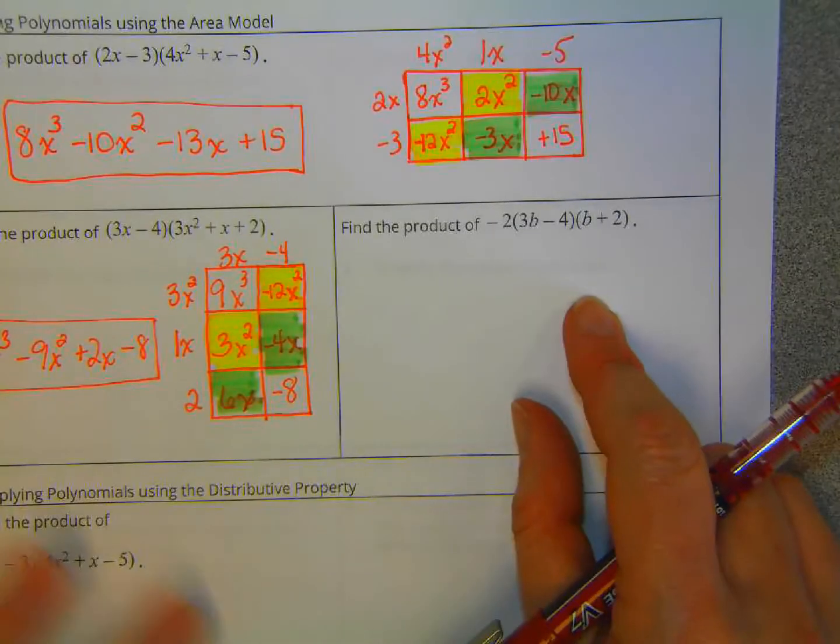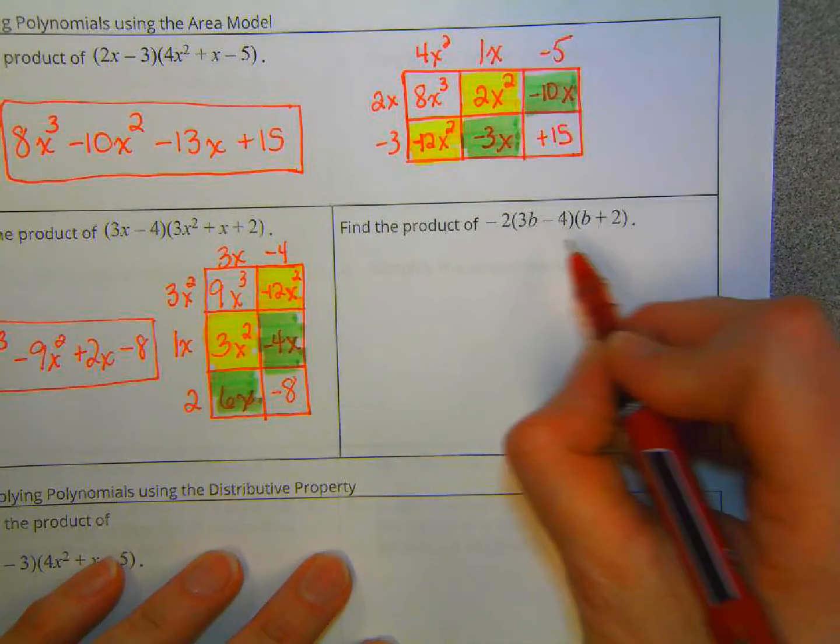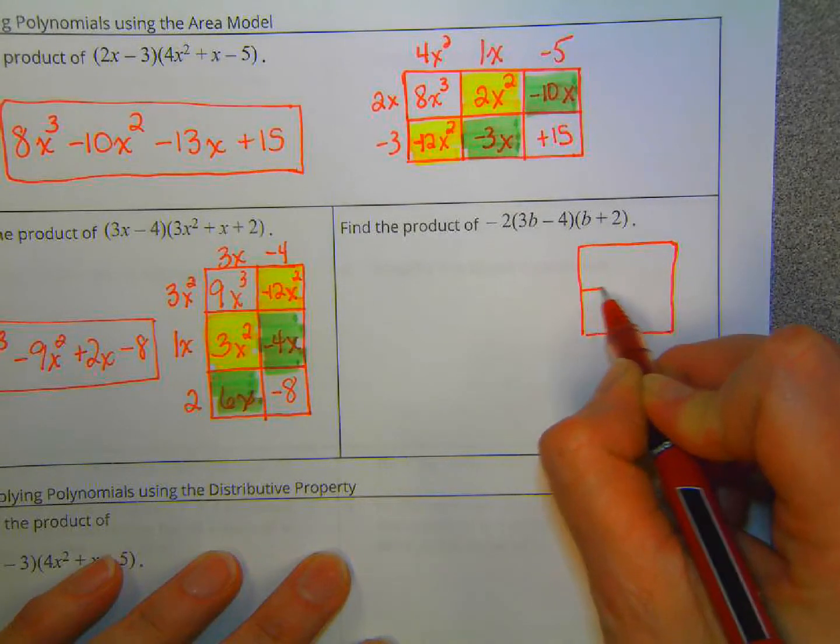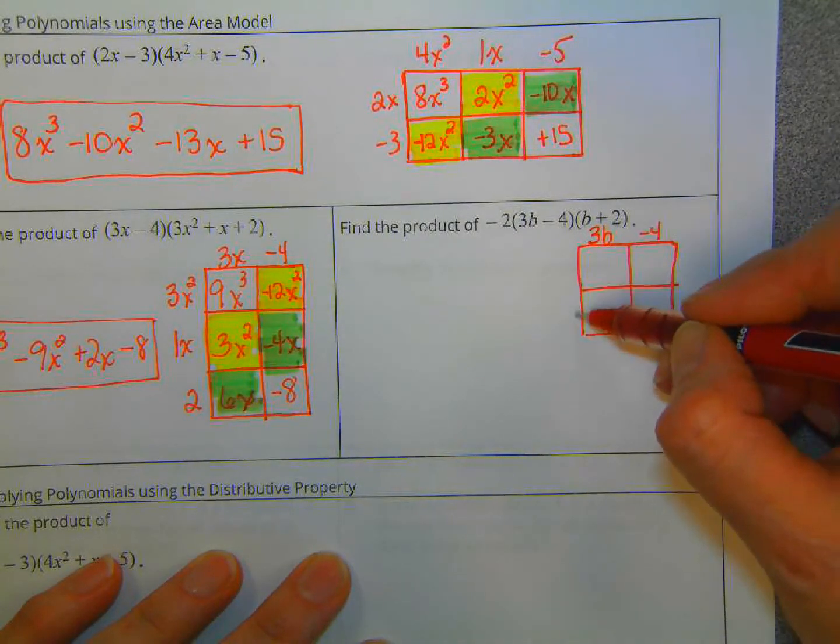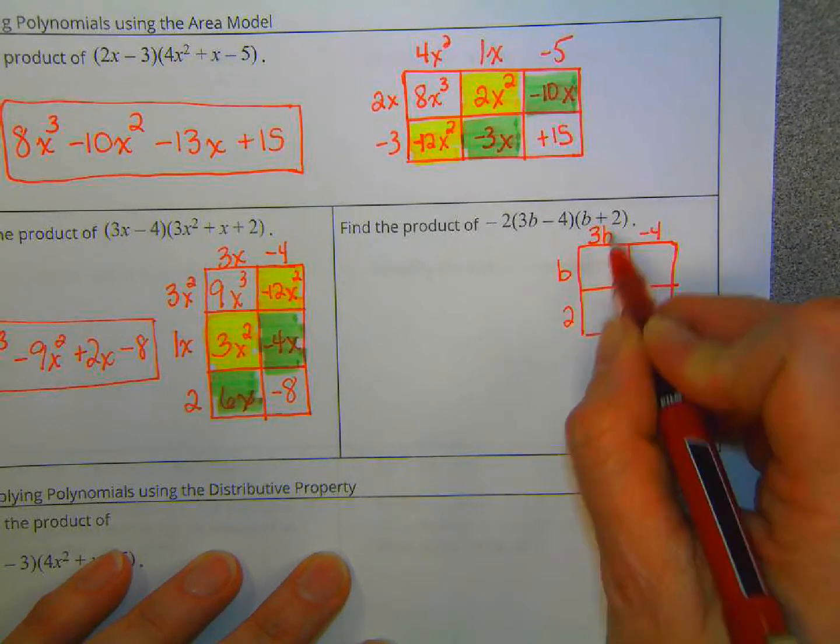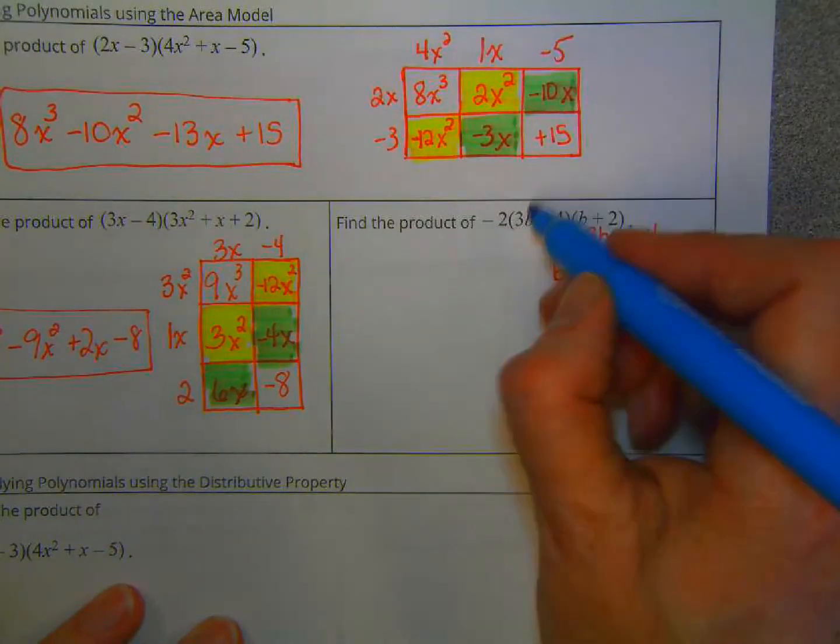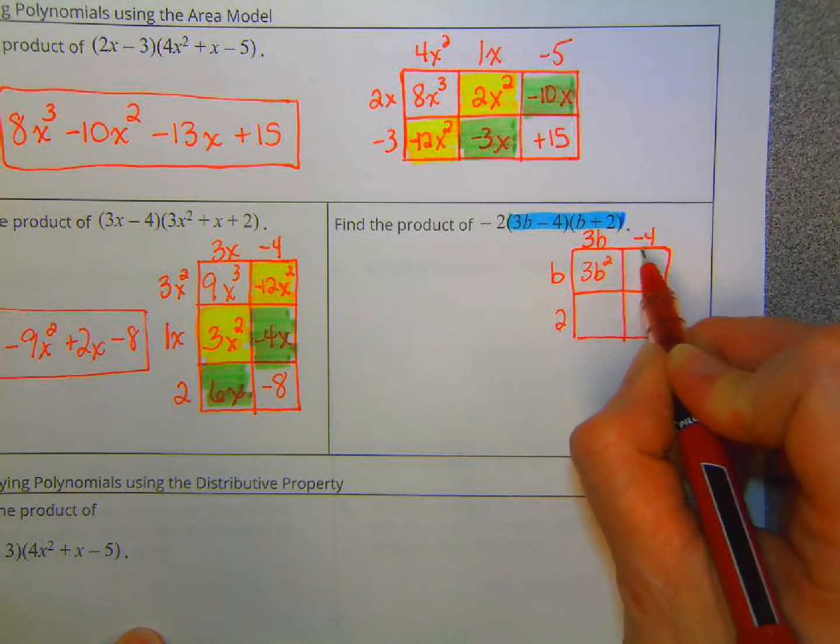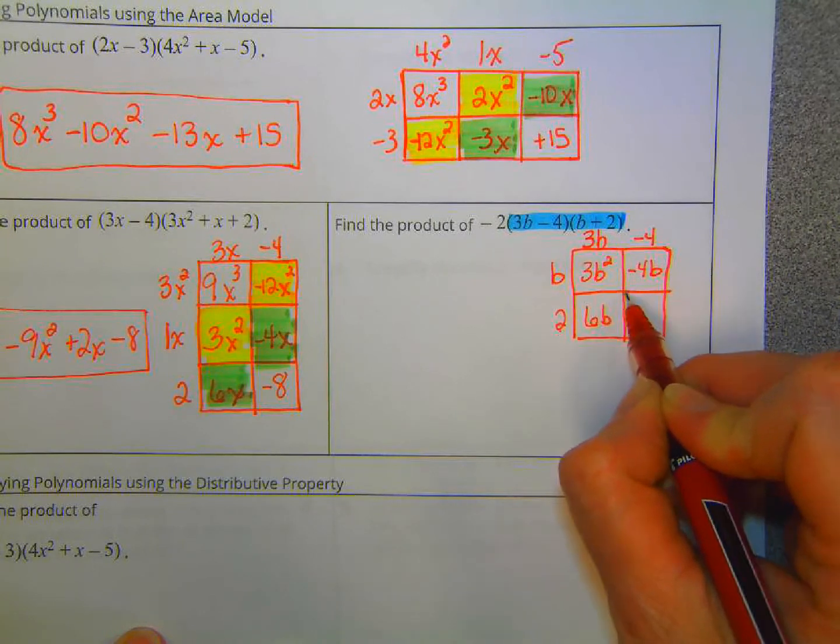And the last example. What's different about this is we have a binomial multiplied by a binomial. And once we get that answer, we want to multiply everything by negative 2. So this is a binomial times a binomial. So I can do 2 short sides. 3b minus 4. You could have put 3b here and the minus 4 there. It doesn't matter. Then b and plus 2. Now we multiply these together again. This is just this part of that product. We're only doing that part right now. So 3b times b is 3b squared. Negative 4 times b is negative 4b. 3b times 2 is 6b. Negative 4 times 2 is negative 8.